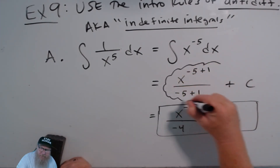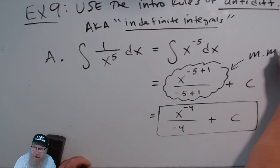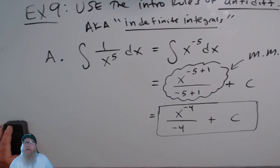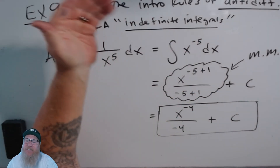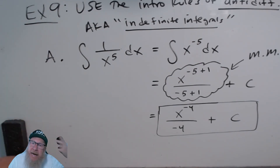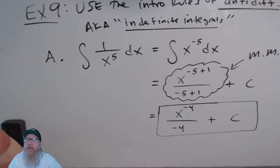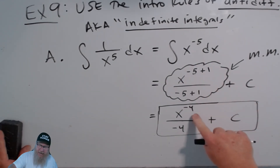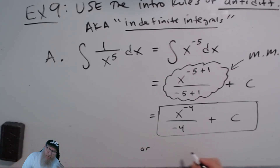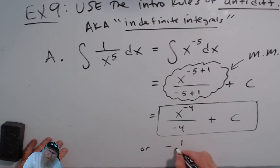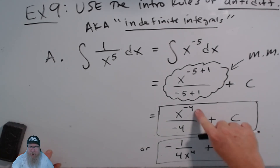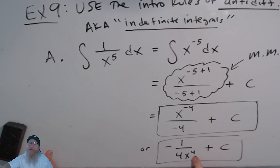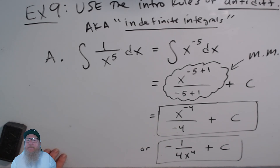So it's x to the negative 5 plus 1, which is x to the negative 4, divided by negative 4, plus C. Be careful: negative 5 plus 1 is negative 4, not negative 6. Your brain might jump to 'five plus one is six,' but it's negative five plus one, which is negative four. Or you can write it as negative one over 4x⁴ plus C. If the power is negative, you can put the variable down in the denominator.